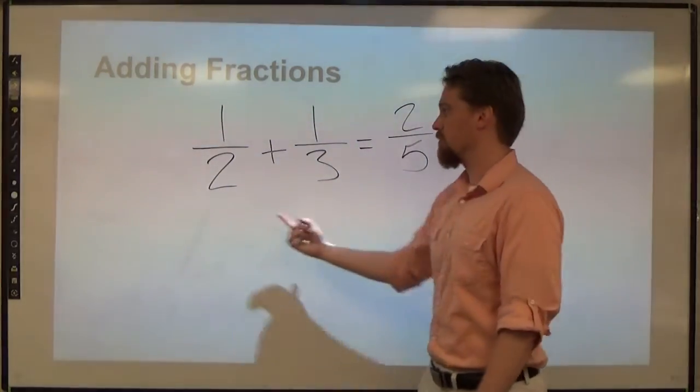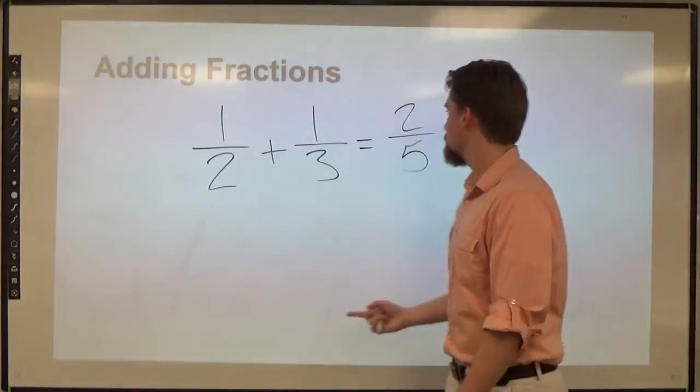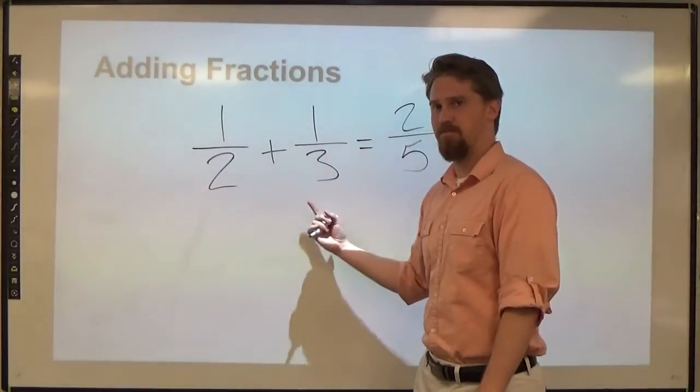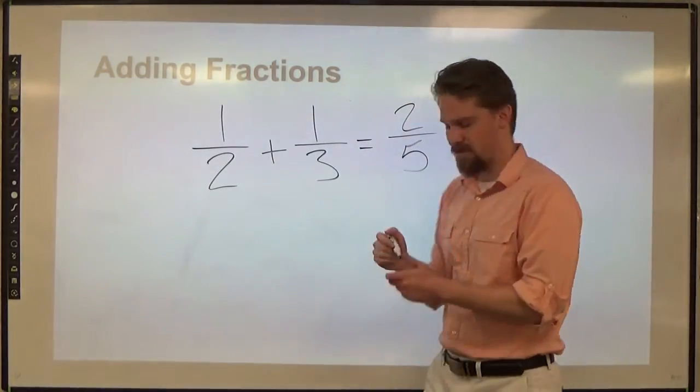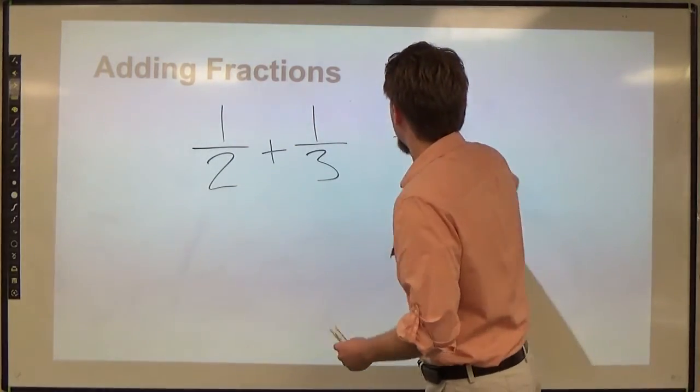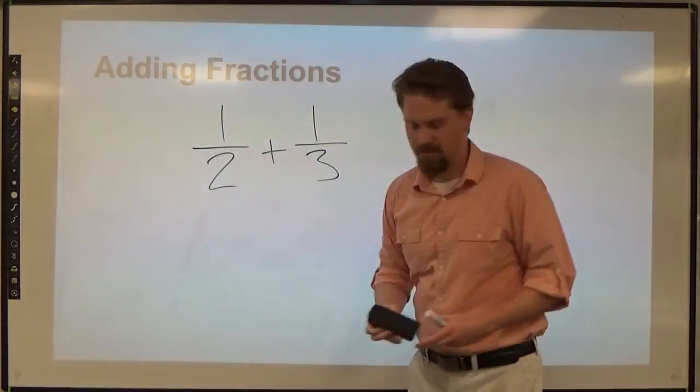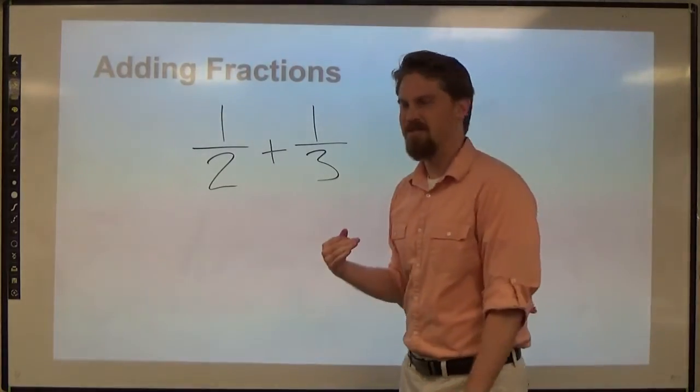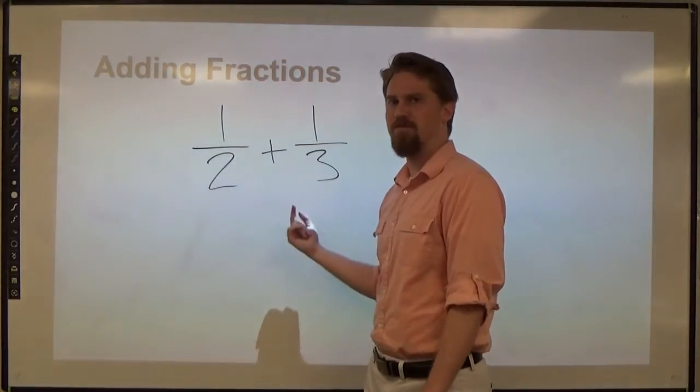That is not true. 1 half is bigger than 2 fifths, and we can't take 1 half and add something bigger than 1 half and get 2 fifths. So where does the logic break down?